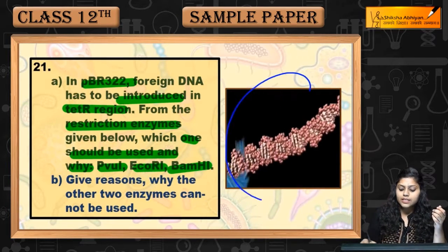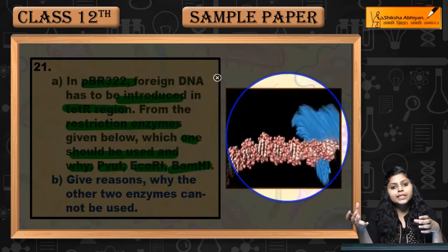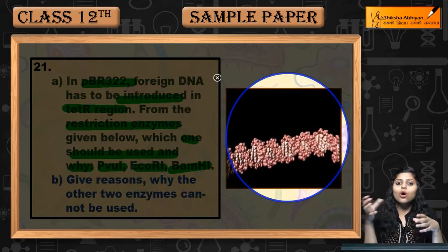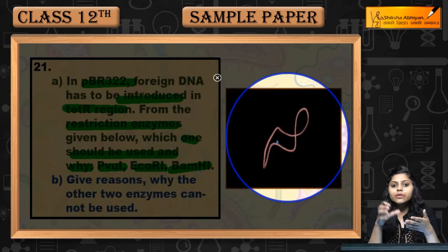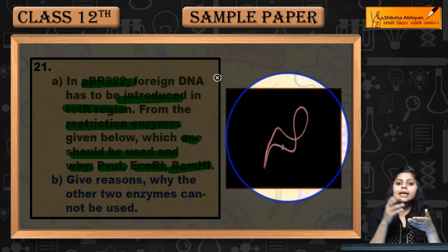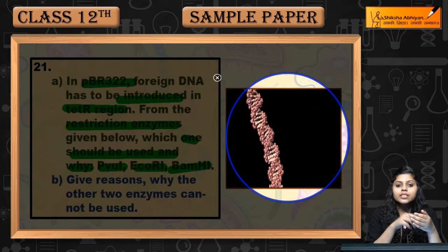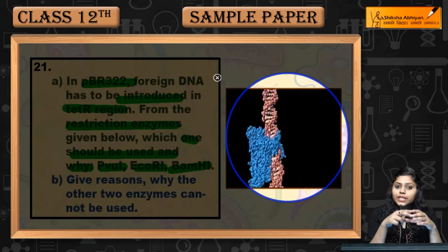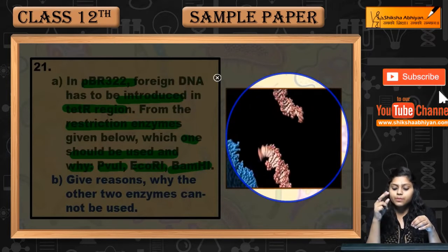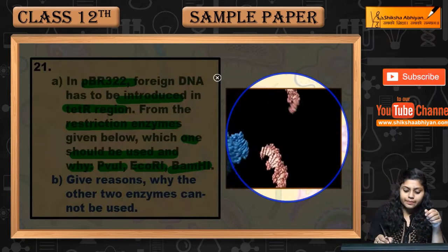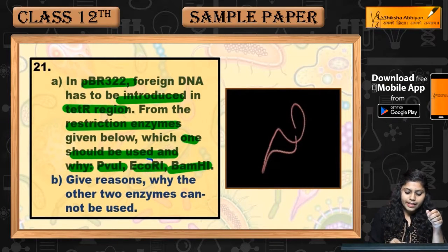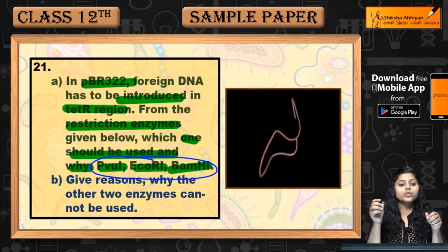Restriction enzymes किसी भी DNA sequence पे जाएंगे, वहाँ पे sequences को read करेंगे, और वो किसी particular sequence को read करके particular site पे cut कर देते हैं। Restriction enzymes का काम होता है किसी DNA sequence को read करना और particular sequence पे जाके cut कर देना। अब पूछा है कि इनमें से कौन से enzymes use होंगे।